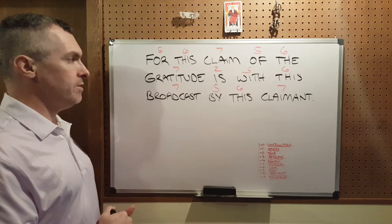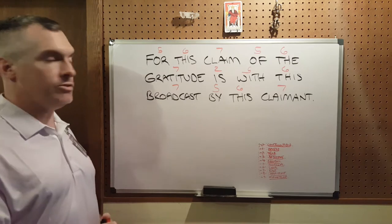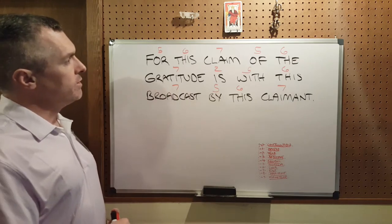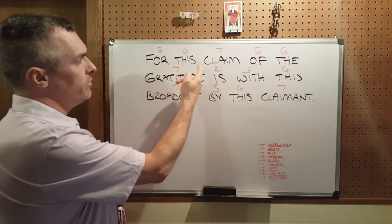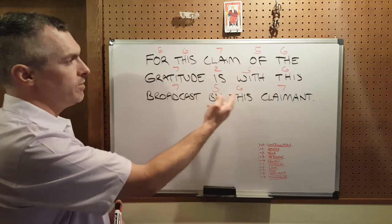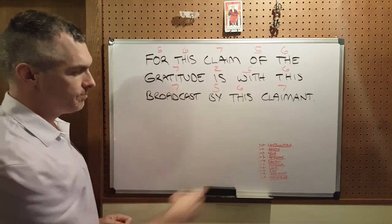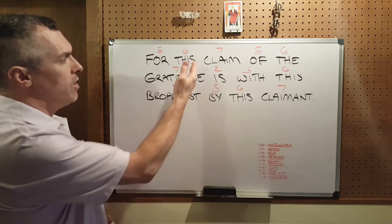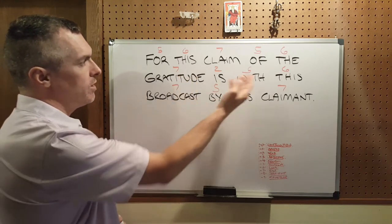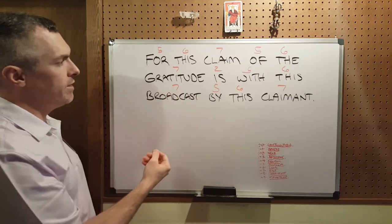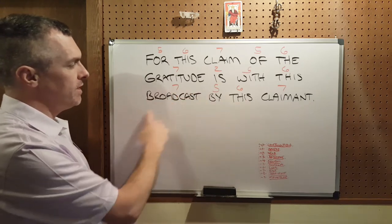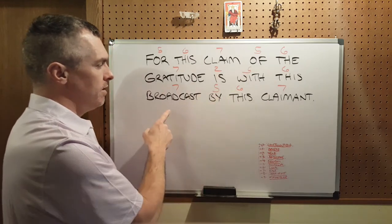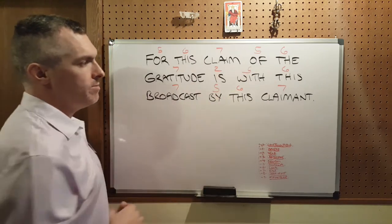Backwards: for this claimant of this broadcast is with the gratitude by this claim. As you can see, the syntax is position-Lodeo-fact, position-Lodeo-fact, verb-position-Lodeo-fact, position-Lodeo-fact. We have a cause, which is the claim; a consequence, which is the gratitude; the verb of the thinking, moving it into the possessive, which is the broadcast. And who is the authority — the claimant, me.